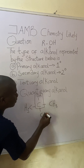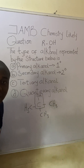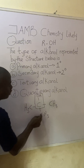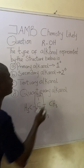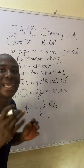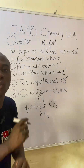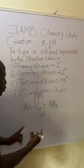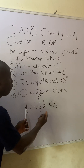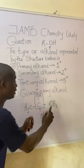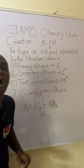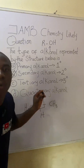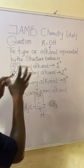For instance, if instead of H we had CH₃ at that position, the carbon bearing the functional group would be directly attached to three carbons — we say it is a tertiary alcanol. Going back to the original question: the carbon is directly attached to two carbons, so this compound is a secondary alcanol. Very easy.